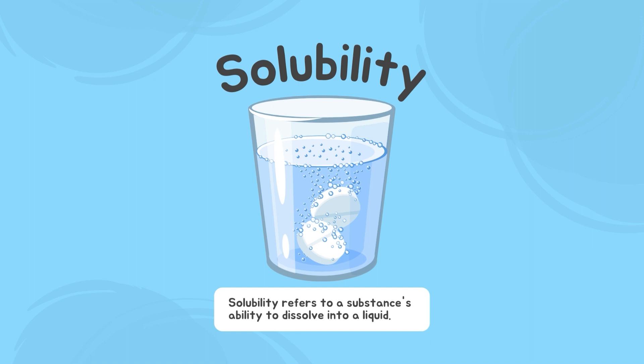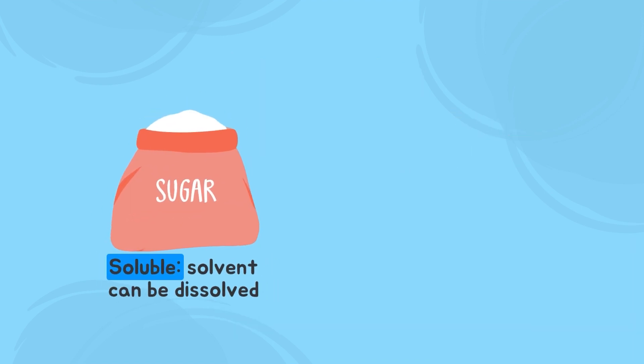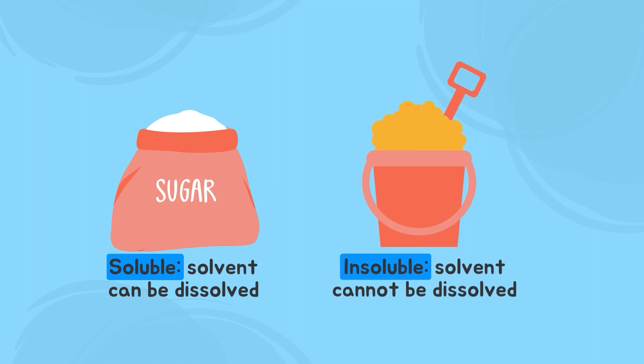Now let's talk about solubility. Solubility refers to a substance's ability to dissolve into a liquid. Dissolving means that the solid completely disappears into the liquid and there are barely any traces of the solid left. The thing that we are trying to dissolve is called the solute. The liquid that we are trying to dissolve the solute in is called the solvent. If a substance easily dissolves into a water solvent, it is considered to be soluble. An example of a soluble solid is sugar, where the solvent is water — the sugar completely dissolves. If a substance does not dissolve, it is considered insoluble; an example is sand in water.